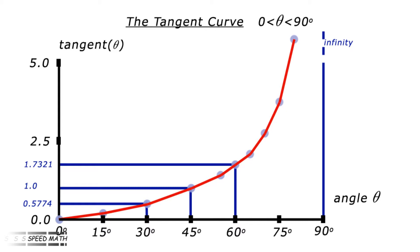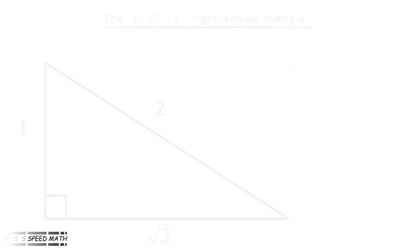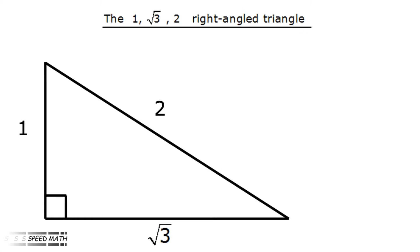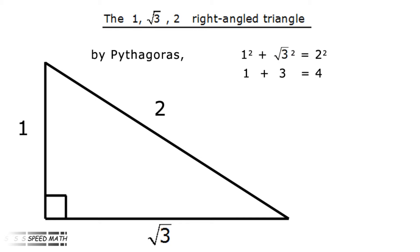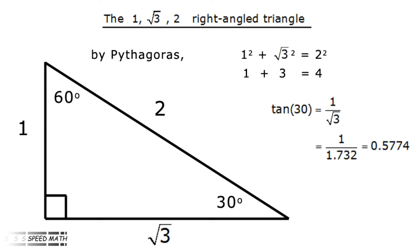Let's look at the 30 degree and 60 degree angles first. These angles reside in a special right-angle triangle with sides 1, root 3, and 2. You can see by using Pythagoras how the numbers work: 1 squared plus root 3 squared equals 2 squared, in other words 1 plus 3 equals 4. Now, tan 30 degrees equals 1 over root 3, which is 0.5774, and tan 60 degrees equals root 3 divided by 1, which gives 1.7321.